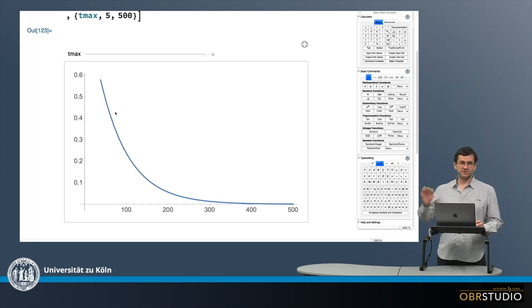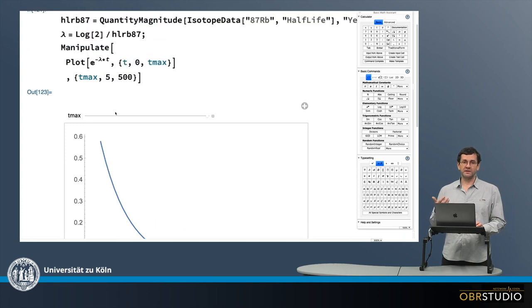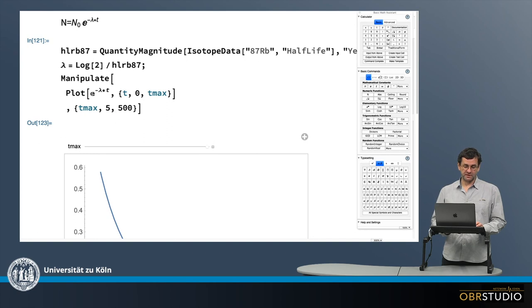Now it might be also interesting not only to see the amount of rubidium-87 that is still there, but also the amount of formed strontium-87. Now this part here is the amount of rubidium-87 still there. So after a certain time it might be 0.99, 0.98, and so on. And the difference to 1 is the amount of strontium-87 that is produced.